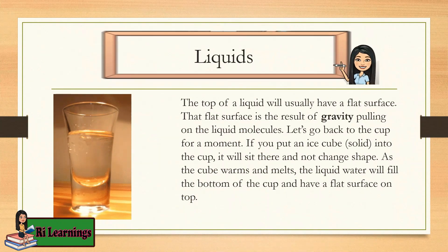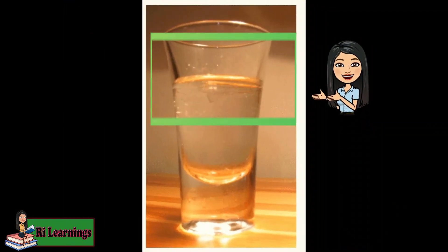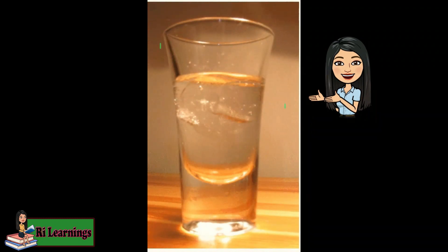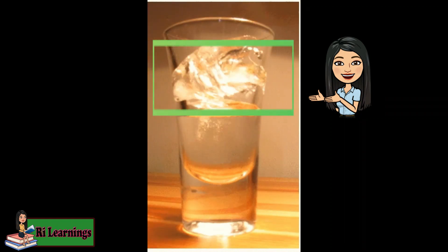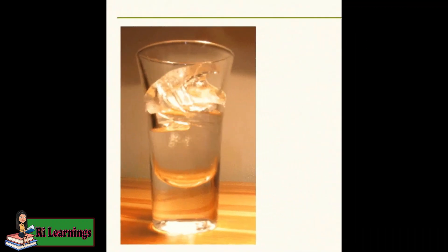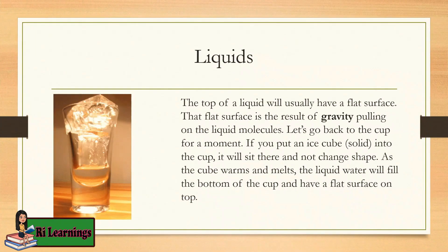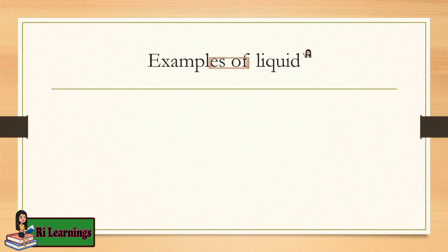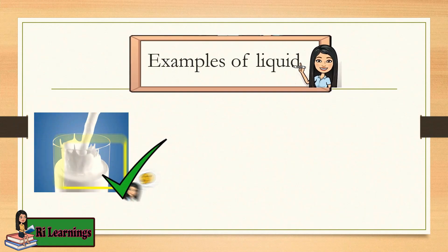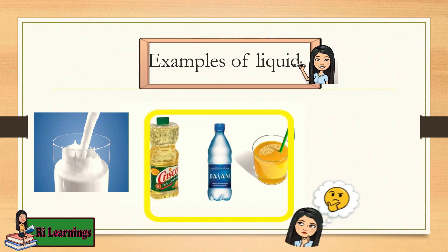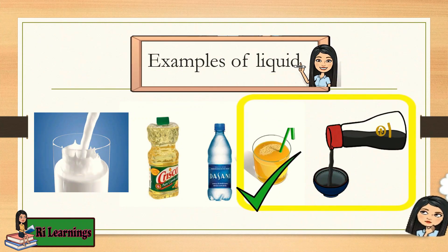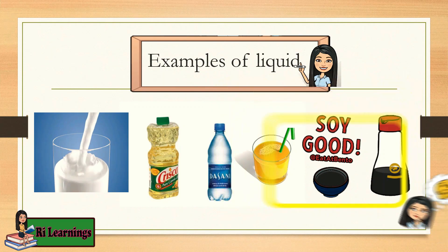The top of a liquid will usually have a flat surface. That flat surface is the result of gravity pulling on the liquid molecules. Let's go back to the cup for a moment. If you put an ice cube, which is a solid, into the cup, it will sit there and not change shape. As the cube warms and melts, the liquid water will fill the bottom of the cup and have a flat surface on top. Examples of liquid: milk, oil, water, juice, and soy sauce. So these are examples of liquid. Can you give other examples?